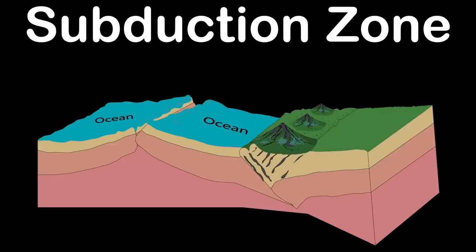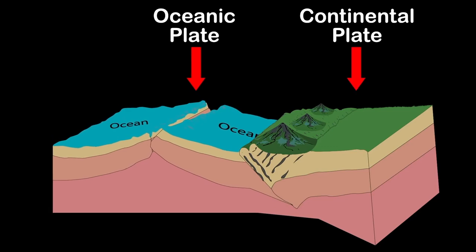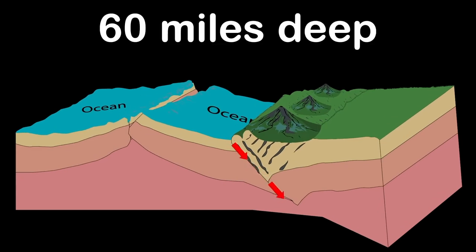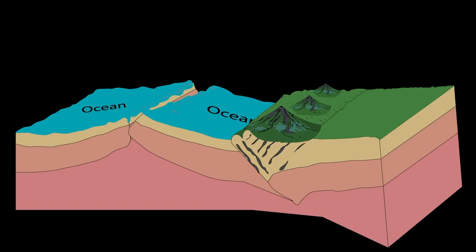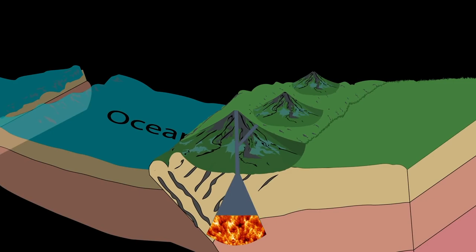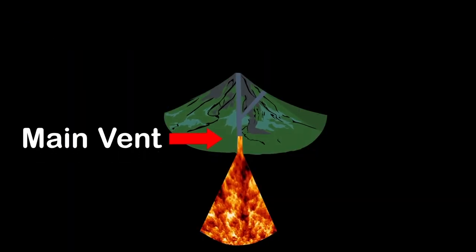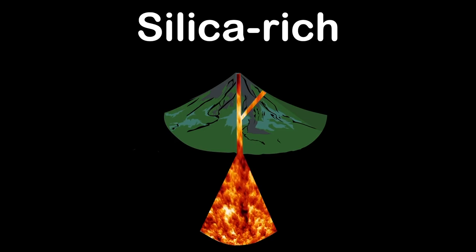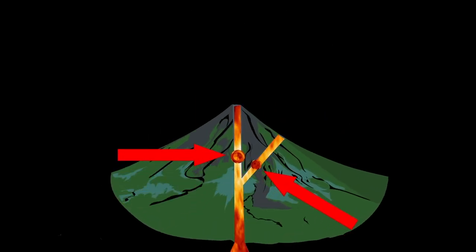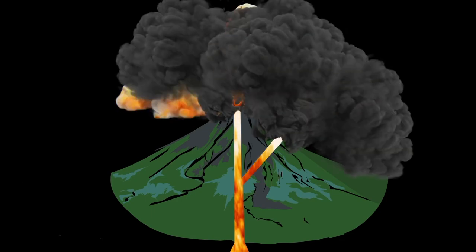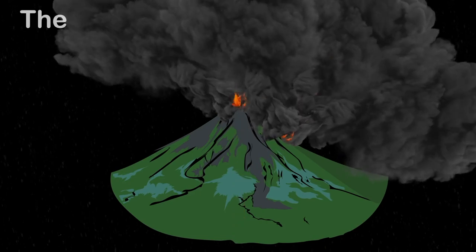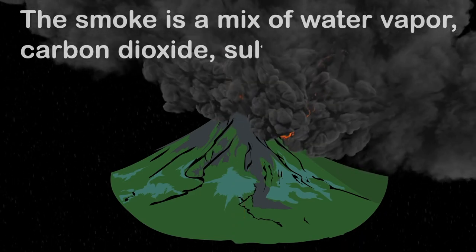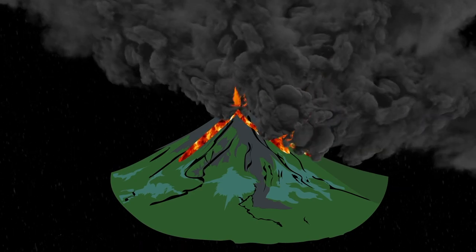At a subduction zone, a thick oceanic plate slides under a thicker continental plate. The oceanic plate is saturated with water, which it drags down into the earth around 60 miles deep. That water trapped inside is then released — this reduces the melting point of the surrounding rock, allowing it to melt. This melted rock rises up the main vent. That magma that reaches the surface is silica-rich and thick. The gases released while melting get trapped in large bubbles, and when one of these bubbles reaches the surface it bursts, causing an explosive volcanic eruption.